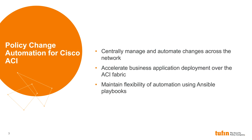The TwoFin policy change automation app for Cisco ACI enables the management and automation of changes across TwoFin customers' networks to include ACI via Ansible. Customers can accelerate business application deployment over the ACI fabric while maintaining the flexibility that Ansible provides by using Cisco recommended playbooks or customizing their own playbooks.